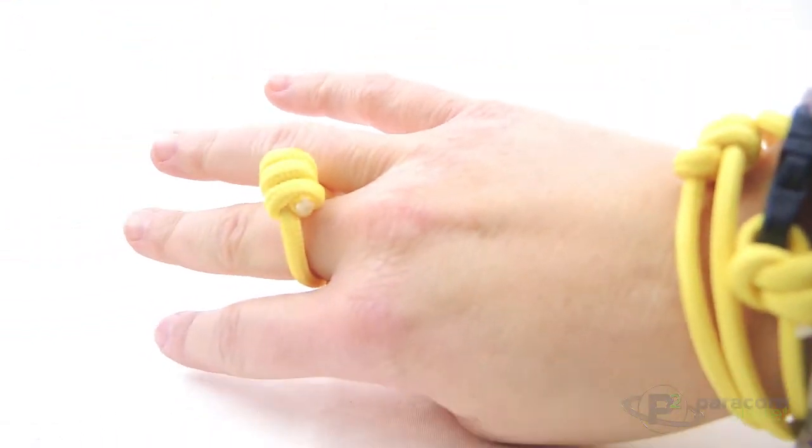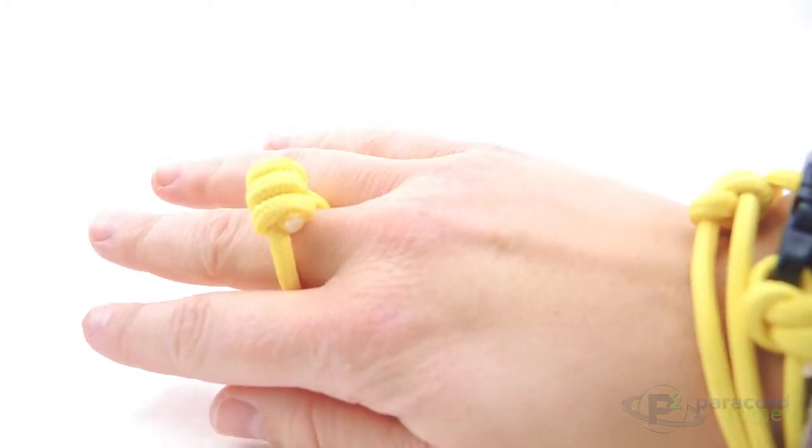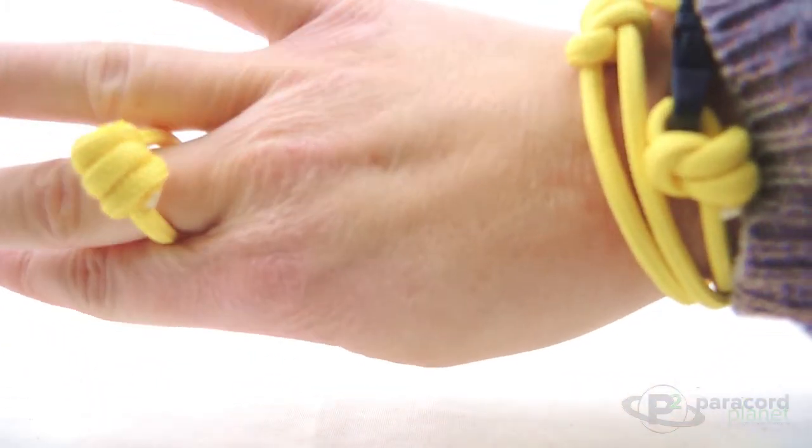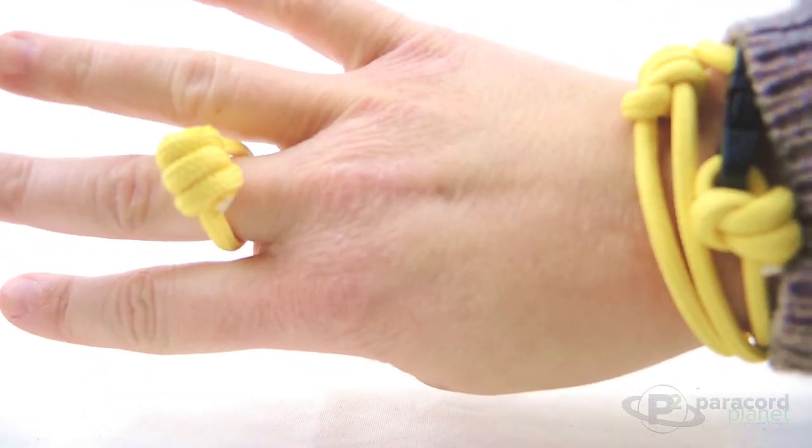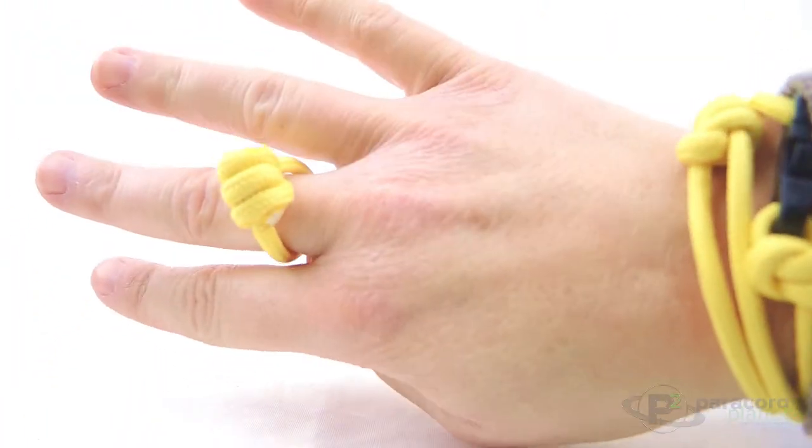And one other thing you can do with the scraps is make a paracord ring. For this all I did was one adjustable knot, put it to the size of my finger, and snipped both ends. And there you go.